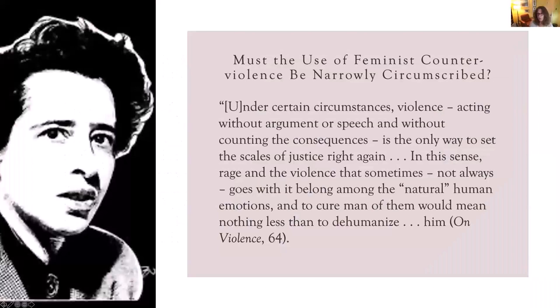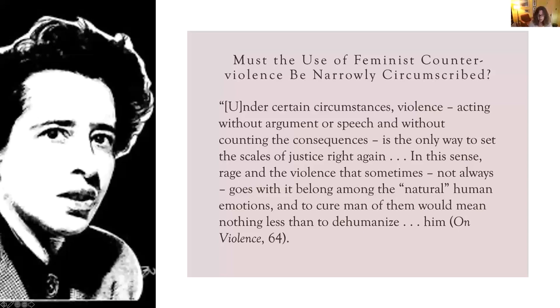Denying certain groups that capacity — by pathologizing their violence and fostering modes of self-relation in which they experience their own capacity for violence as pathological — is to deny those groups access to the full range of experience through which freedom may be actualized. Arendt makes the same point when she says that rage and therefore, by extension, violence are fundamentally human, and that denying them to some groups is dehumanizing. Like Arendt, Beauvoir is not saying human beings are inherently violent; rather she considers violence an unavoidable effect of the tension and conflict that characterize an ambiguous human existence.